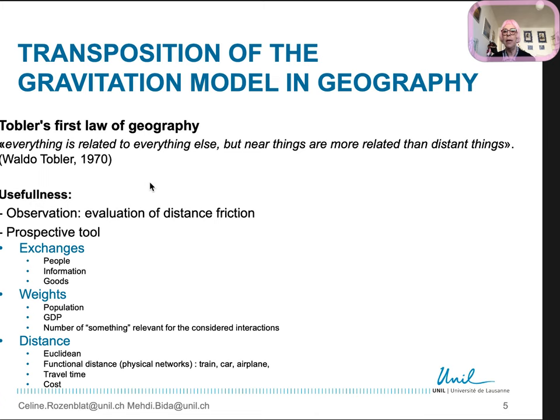The gravitation model can be used to observe and evaluate the distance friction, eventually its evolution, but it can be used as well as a prospective tool. If we know the different masses and the distance, we can guess the flows.